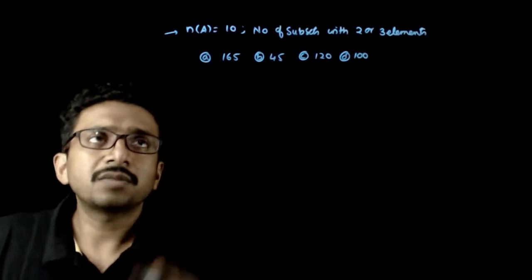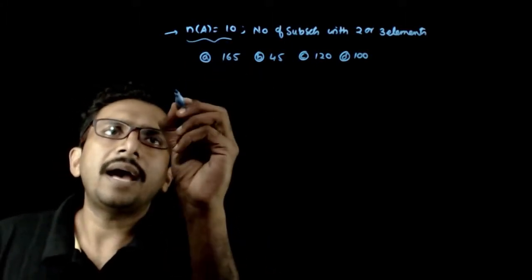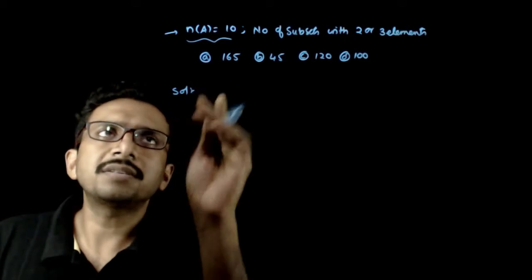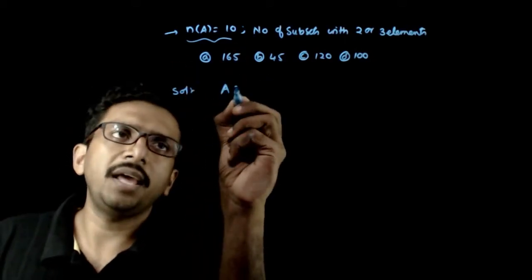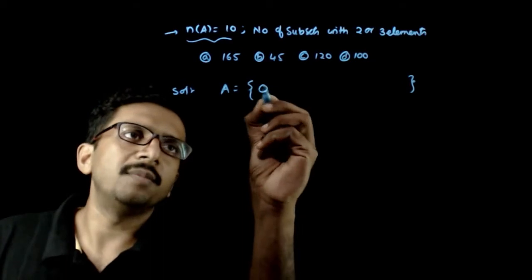Welcome students. In this question, you have 10 elements in the set A. A is a set containing 10 elements.